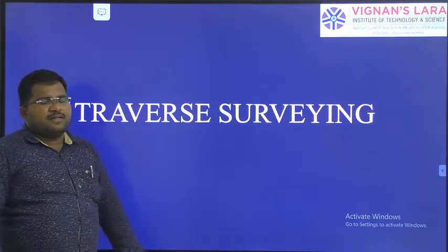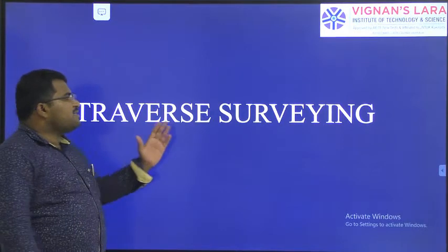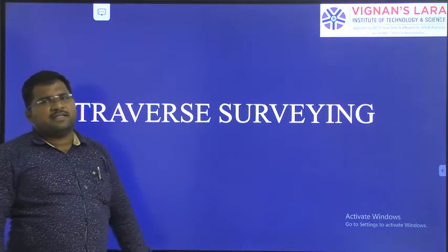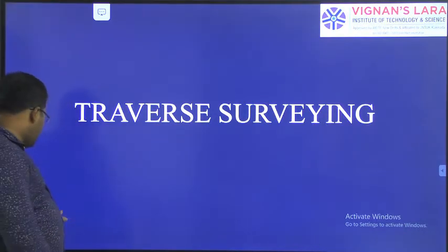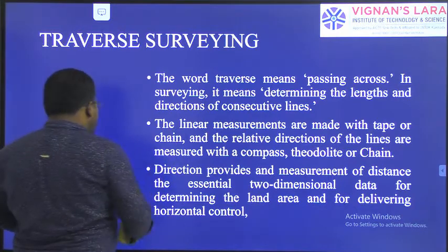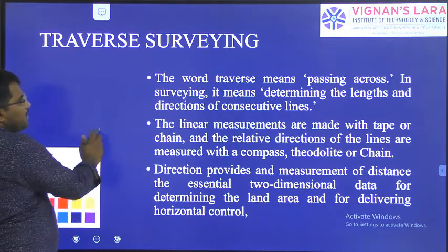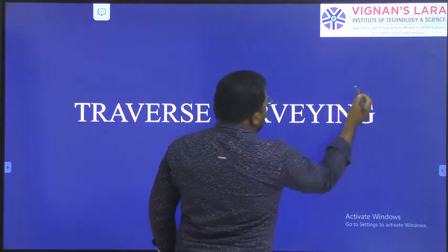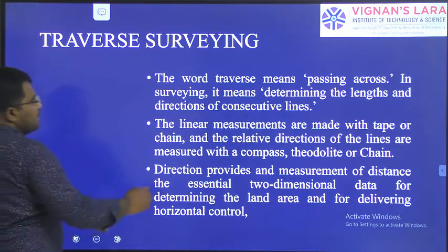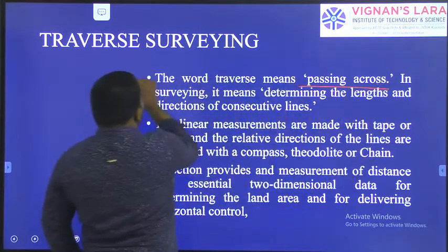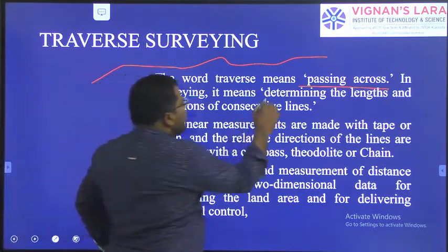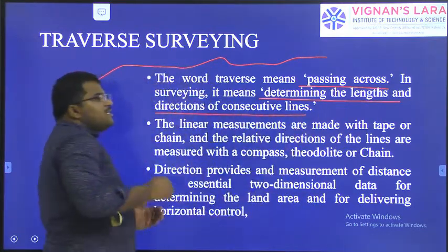The next topic in Unit 3 is traverse surveying. Traverse means moving along a line or along a closed path. The actual meaning of traverse is 'passing across' — we are going to move continuously from one position to another. In surveying, this means determining the length and directions of consecutive lines.